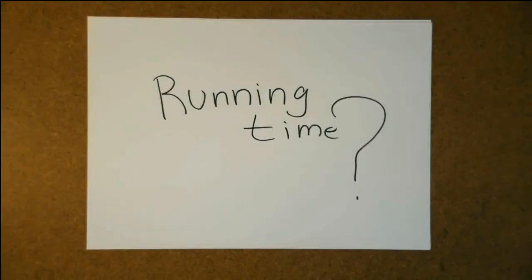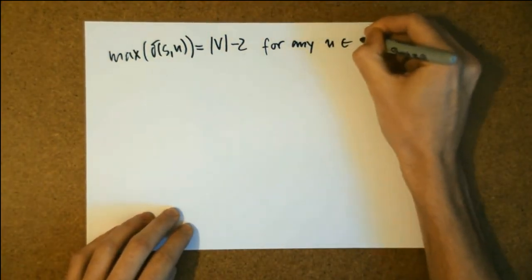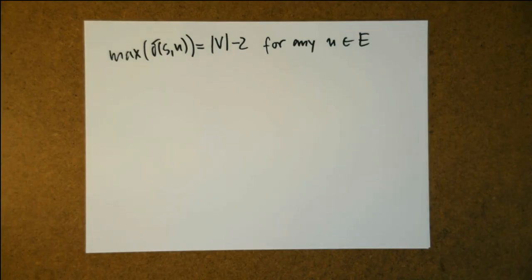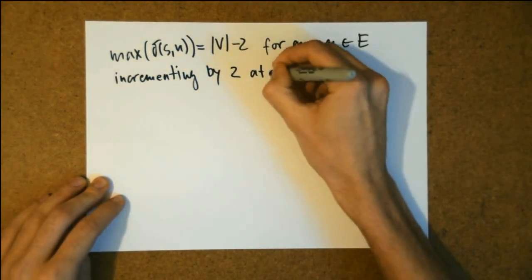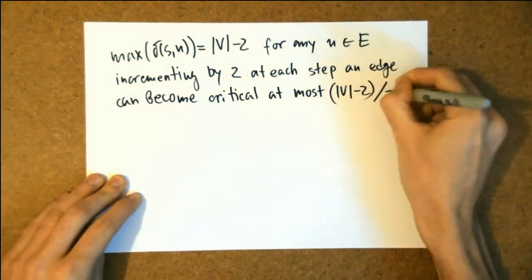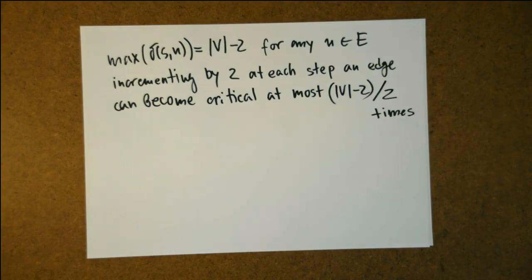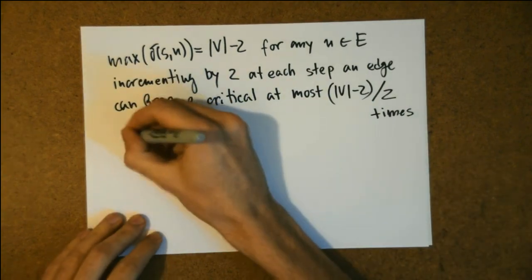In order to figure out the running time of this algorithm, first, one needs to note that augmenting paths are increasing monotonically as the algorithm progresses, and also understand that from the time an edge becomes critical and is reversed in the subsequent residual network, to the time it can be traversed again and possibly become critical again, the distance from S to its beginning increases by at least 2. The distance from the source S to some vertex U on a shortest path can reach, at most, the number of vertices V minus 2.